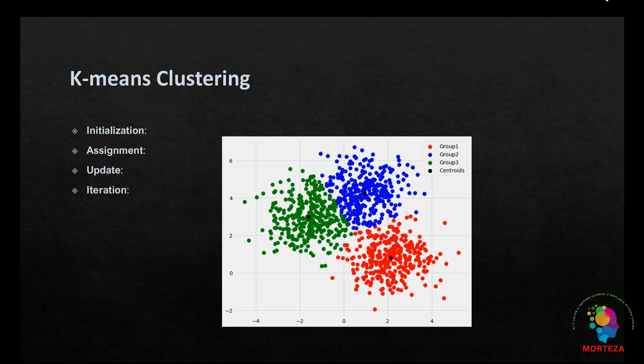K-means clustering is particularly useful when the data forms spherical clusters of similar sizes. In hyperspectral imaging, this can help in segmenting different regions based on their spectral properties. For example, distinguishing between different types of vegetation, minerals, or other materials based on how they reflect light.